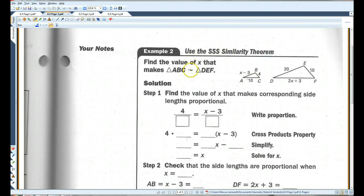Find the value of x that makes triangle ABC similar to triangle DEF. First thing, we need to find the value of x that makes the corresponding side lengths proportional. 4 corresponds with 10, x minus 3 corresponds with 20. So now we can cross multiply: 4 times 20 equals 10 times (x minus 3).